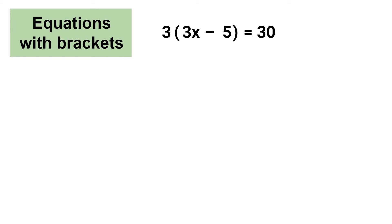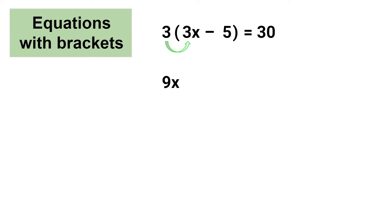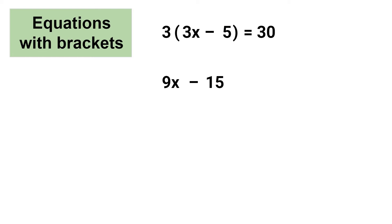The first step is to expand the brackets, which means I'll need to multiply the term outside of the brackets by the terms inside of the brackets. So first, 3 multiplied by 3x equals 9x. Next I need to multiply 3 by 5. It's important to always consider the operation to the left of a term when carrying out your calculations, so this is 3 multiplied by negative 5, which equals negative 15. Let's bring down the remaining part of the equation: equals 30.